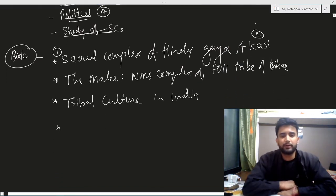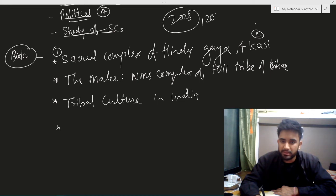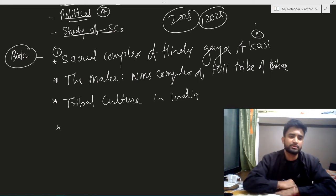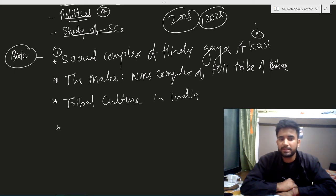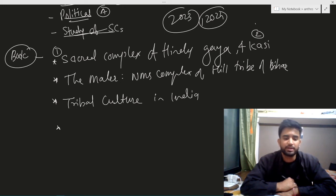If a question comes on LP Vidyarthi, remember these important books. He is a highly probable question for 2023 or at worst 2024, as he has not been asked for the past four to five years. The first book is 'Sacred Complex of Hindu Gaya,' the second is 'Sacred Complex of Kashi,' the third is 'The Maler: Nature-Man-Spirit Complex of Hill Tribes of Bihar,' and the fourth is 'Tribal Culture of India.'